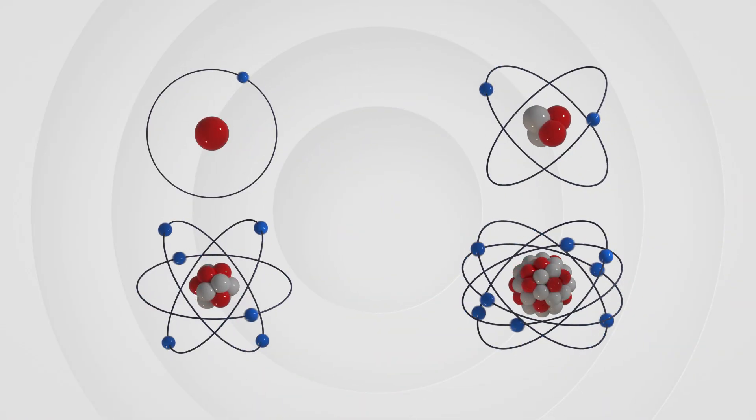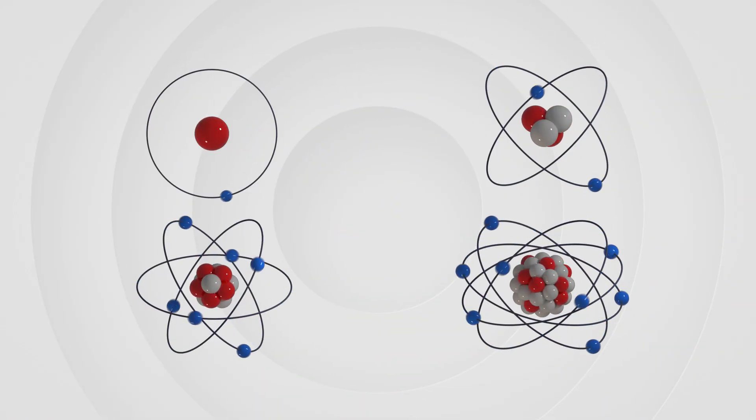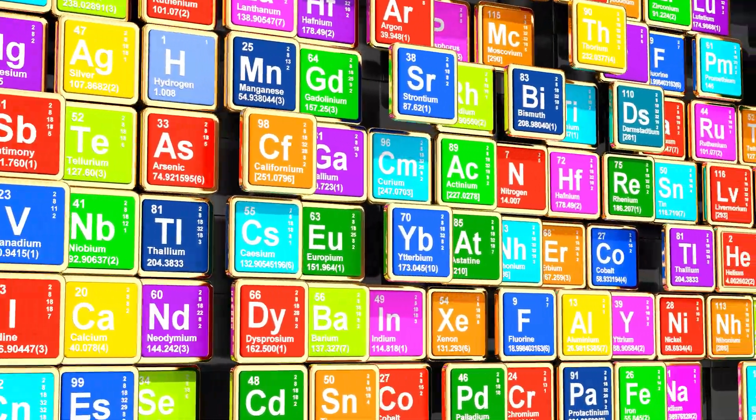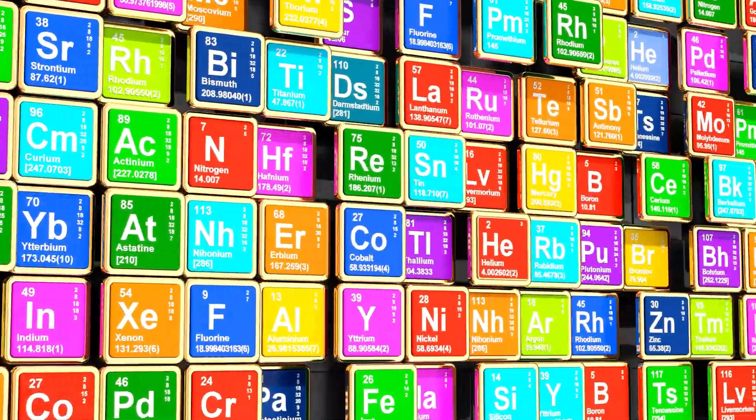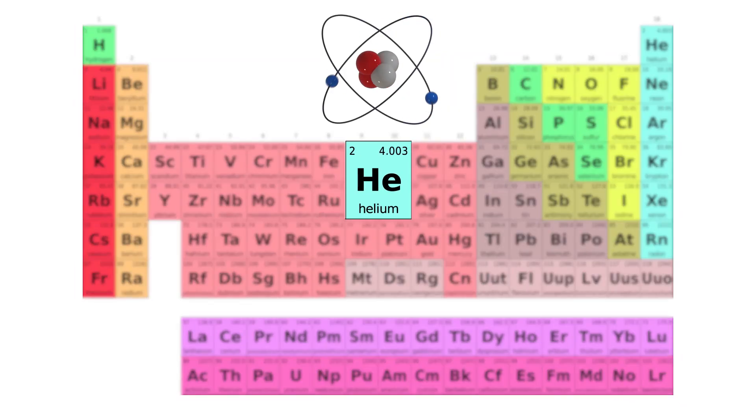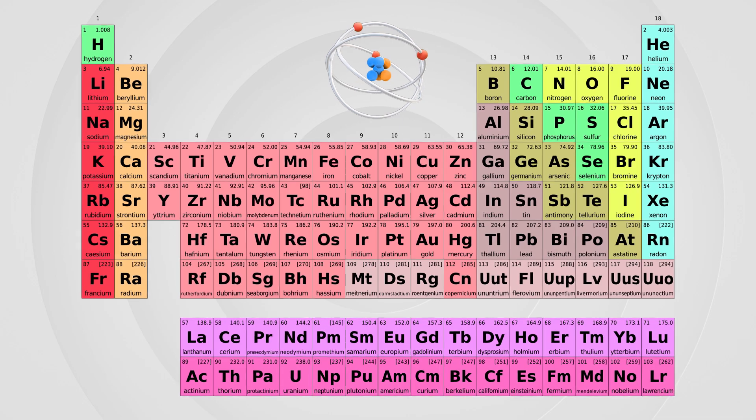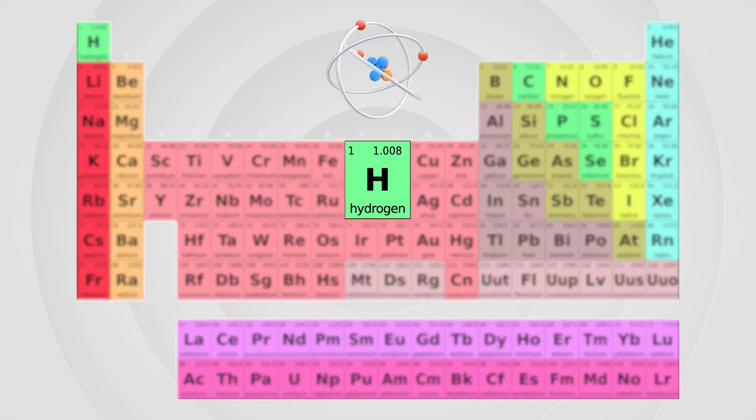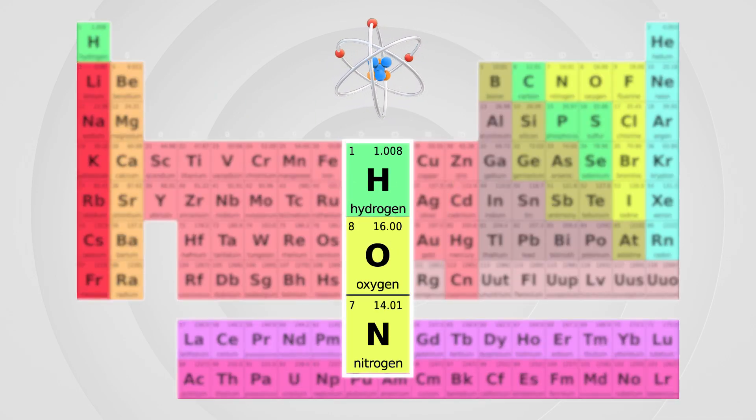The atom is the basic particle of all the chemical elements found on the periodic table. Some elements are made from a single atom, like helium, neon, and argon, while others have more, like hydrogen, oxygen, and nitrogen.